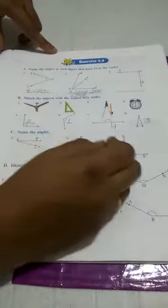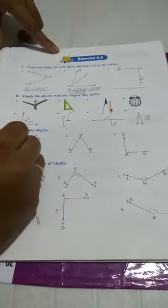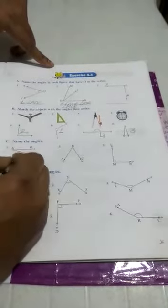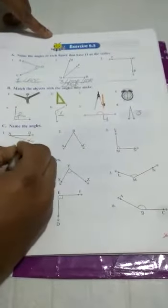Here, angles are given. We have to name it. How to name it? First, always keep in your mind the vertex should come in the middle. So, make the symbol of angle B, A, F.